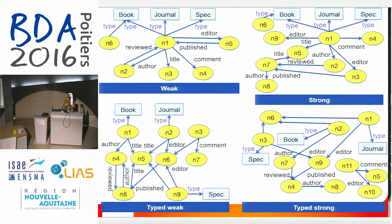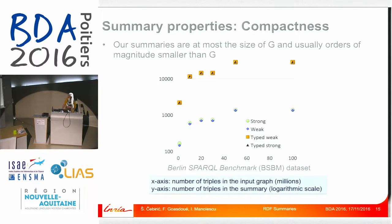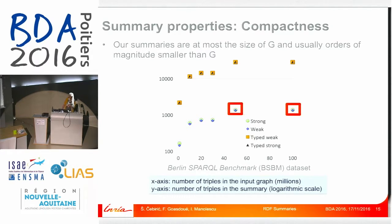So now we have four summaries: weak, strong, type-to-weak, and type-strong. We look first at compactness. We showed that the summary cannot be larger than G, and our experiments confirmed that these summaries are usually orders of magnitude smaller than the input. For the strong and weak summaries on the synthetic Berlin SPARQL benchmark dataset, with the horizontal axis showing the number of triples in the input in millions and the vertical axis the number of triples in the summary, we see that for 50 million and 100 million triples in the input, the strong and weak summaries have only around 1000 triples. Typed weak and type-strong are usually larger, but still orders of magnitude smaller than the input. And we see that for this dataset the summary doesn't actually change from 50 million to 100 million triples.